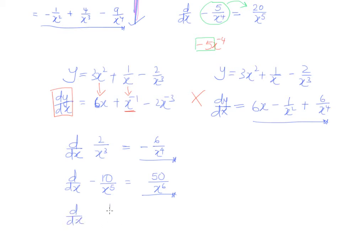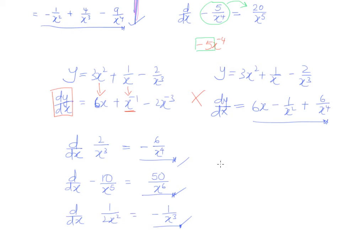Let's try a slightly harder one. If you have one over two x squared — it's positive, so differentiating it becomes negative. There's a half and multiply by two, so the half multiplied by two gives you one. So the answer is negative one over x cubed. If you can arrive at all these three answers without writing anything down, by following the thinking process taught here, you can already do this a lot faster than many of your friends.